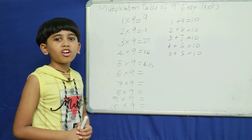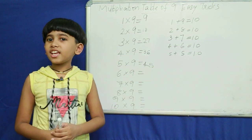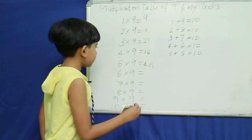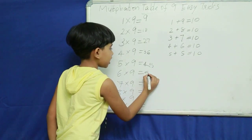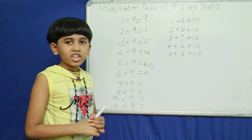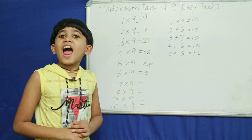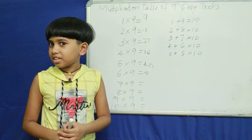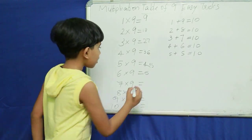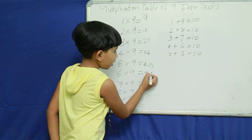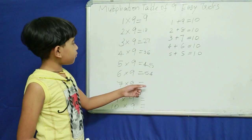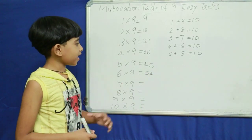Next, predecessor of 6 — 5. What do you add to 6 to get 10? 4. So we get 54.